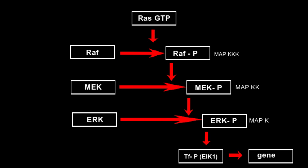ERK is an extracellular regulated kinase, also known as MAP kinase, represented as MAP-K. MEK activates ERK; MEK stands for MAP kinase/ERK activating kinase, hence MEK is known as MAP kinase kinase, represented as MAP-KK. RAF activates MEK; RAF is a serine-threonine protein kinase, so RAF is known as MAP kinase kinase kinase, represented as MAP-KKK.